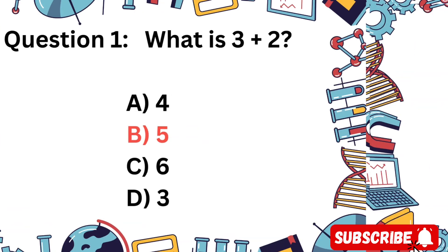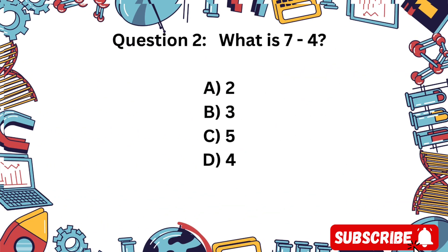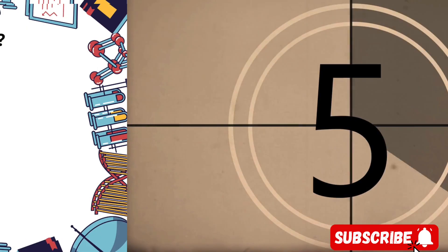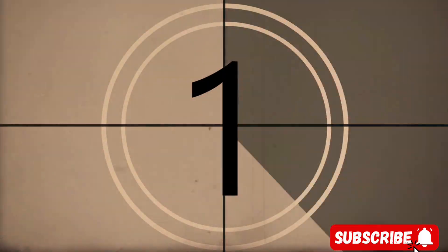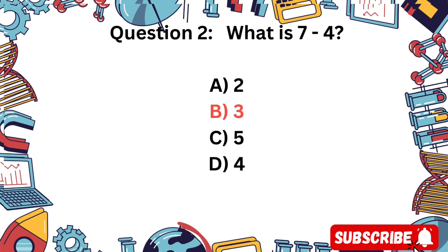Question 2. What is 7 minus 4? Is it A) 2, B) 3, C) 5, or D) 4? That's right! 7 minus 4 equals 3.